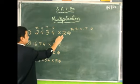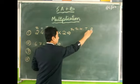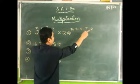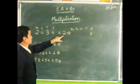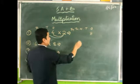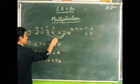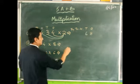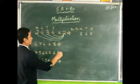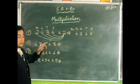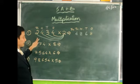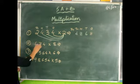What we should do is first multiply the ones — whatever answer we get, write it below the ones. Ready? Two fours are eight — write eight in ones. Two threes are six — write six in tens. Two fours are eight — write eight in hundreds. Two twos are four — write four in thousands. Let's check: two fours are eight, two threes are six, two fours are eight, two twos are four. Very good!